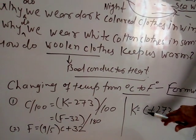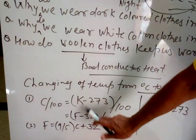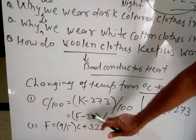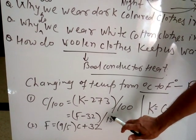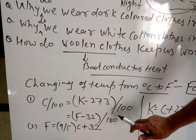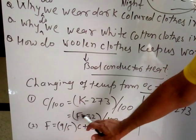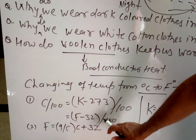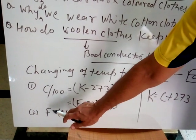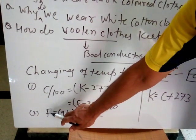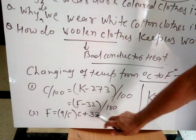Deriving further, the formula relating Celsius and Fahrenheit is: C/100 = (F − 32)/180. To find the value of Fahrenheit directly, the formula is: F = (9/5) × C + 32. Using these formulas, you can convert any temperature value between Celsius, Fahrenheit, and Kelvin.